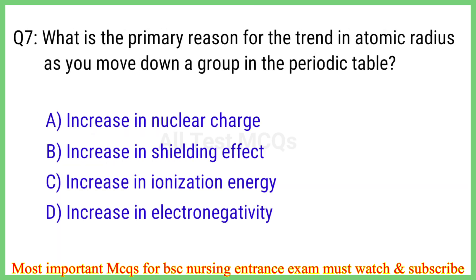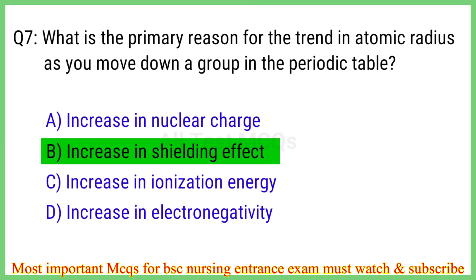Q7. What is the primary reason for the trend in atomic radius as you move down a group in the periodic table? The right answer is option B: Increase in shielding effect.